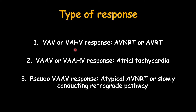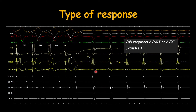Based on this type of response we can differentiate between various narrow complex tachycardias. A VAV response is seen in cases of AVNRT or AVRT, whereas a VAAV or VAAHV response is seen in cases of atrial tachycardia. Sometimes we may see a pseudo-VAV response, which is seen in cases of atypical AVNRT or slowly conducting retrograde accessory pathways. Here the type of response is VAV, which goes in favor of either AVNRT or AVRT and excludes atrial tachycardia.